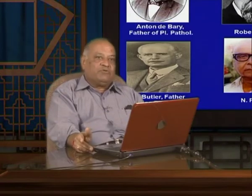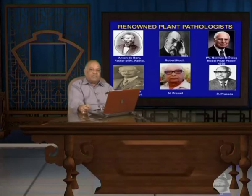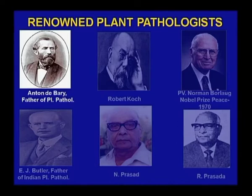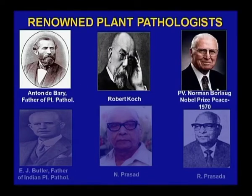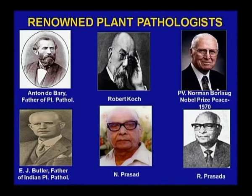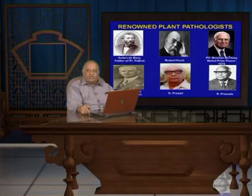To pay homage to the champions of plant pathology, here are pictures of the great masters of the subject: Anton de Bary, who is known as the father of plant pathology; Robert Koch, who gave us Koch's postulates; Padma Vibhushan Norman Borlaug, who won the Nobel Prize for peace in 1970 and is also a member of the plant pathological society; E.J. Butler, regarded as the father of Indian plant pathology, who served at IARI New Delhi as an imperial plant pathologist; and Professor N. Prasad and R. Prasada, who have been long associated with plant pathological sciences in India and contributed greatly to the development of the subject.